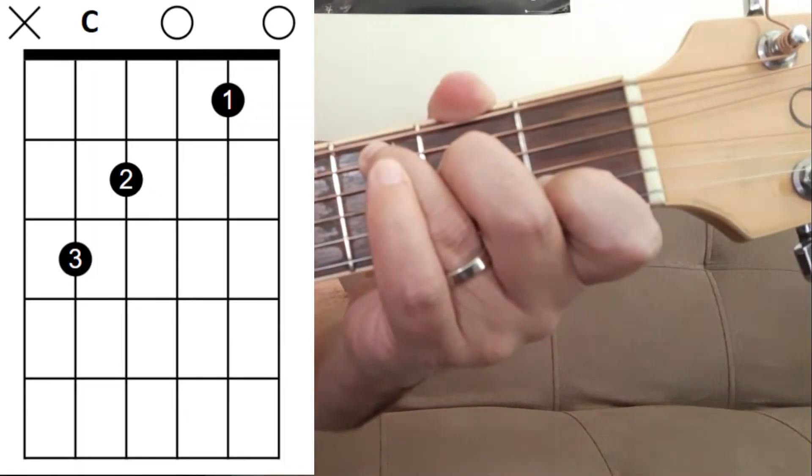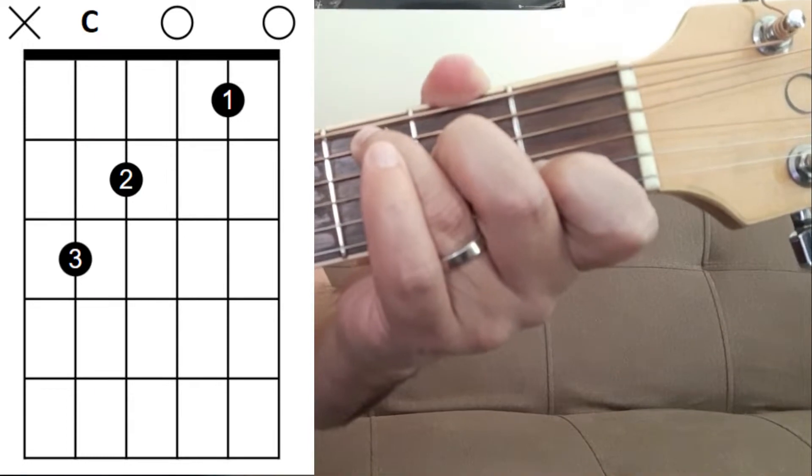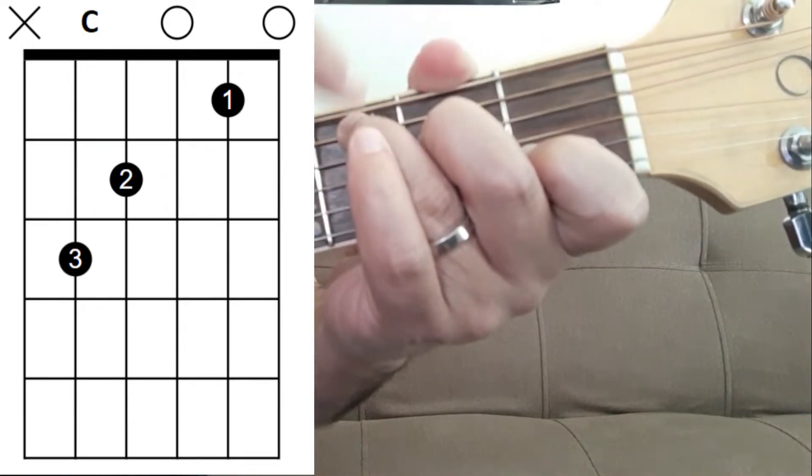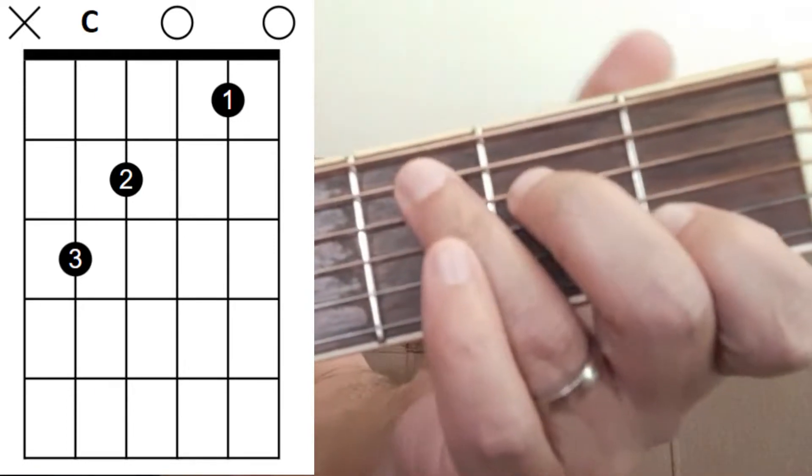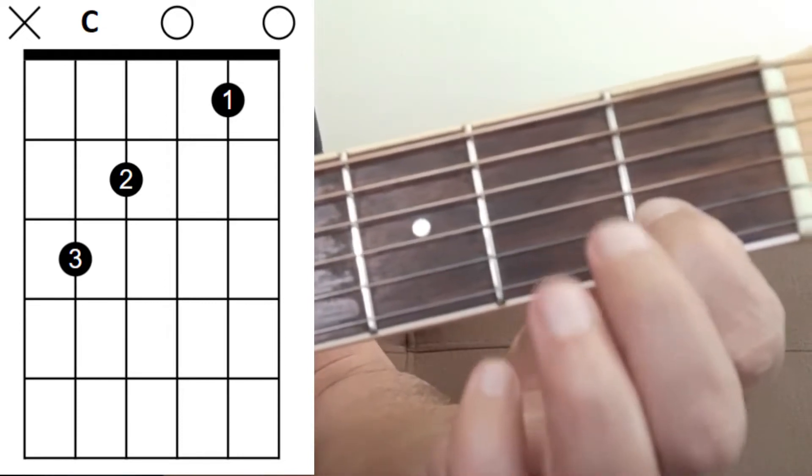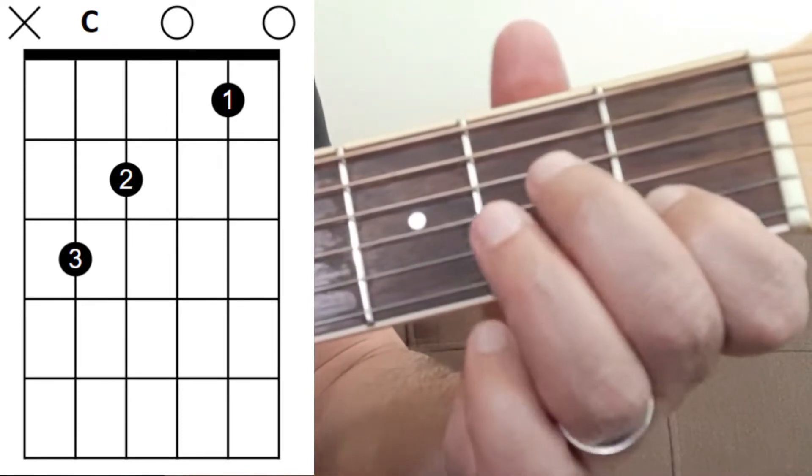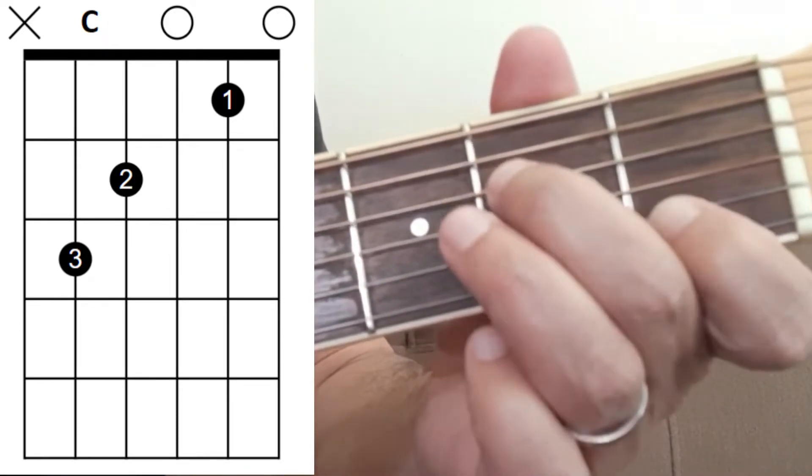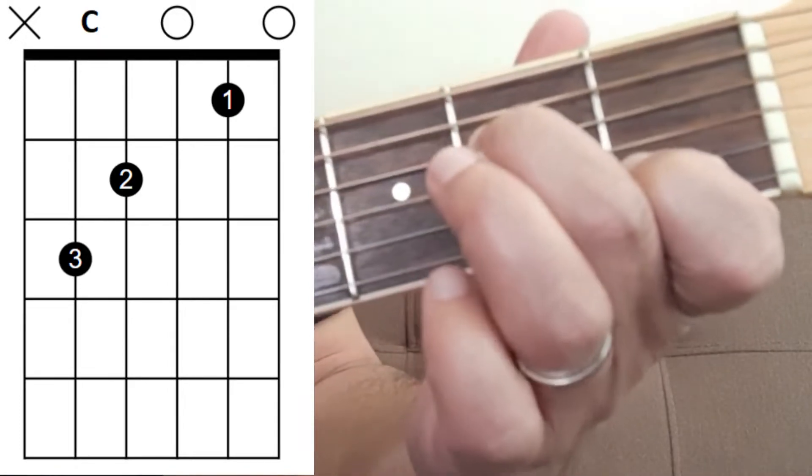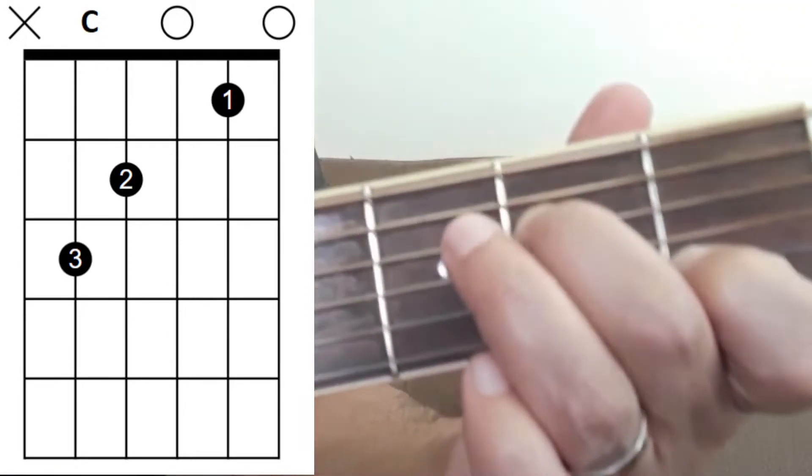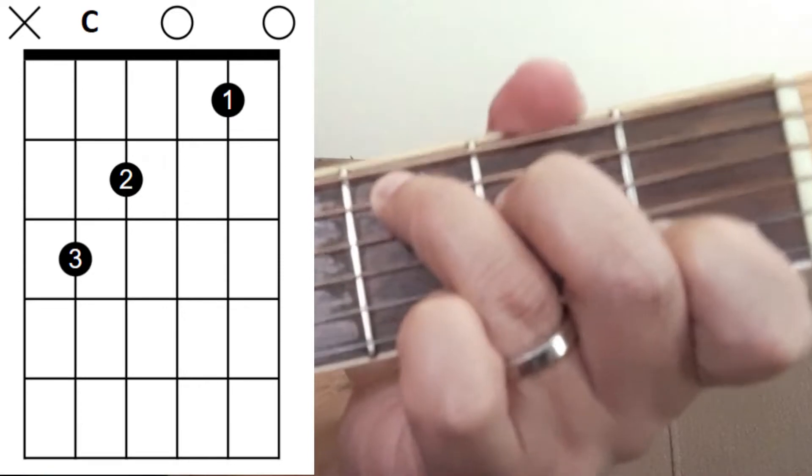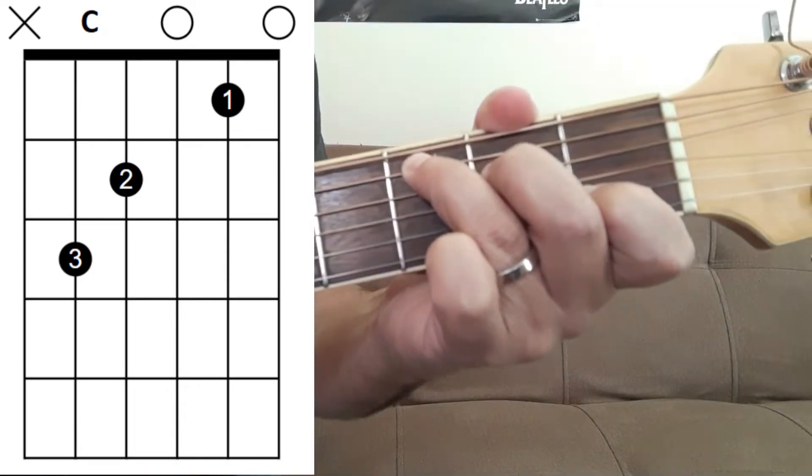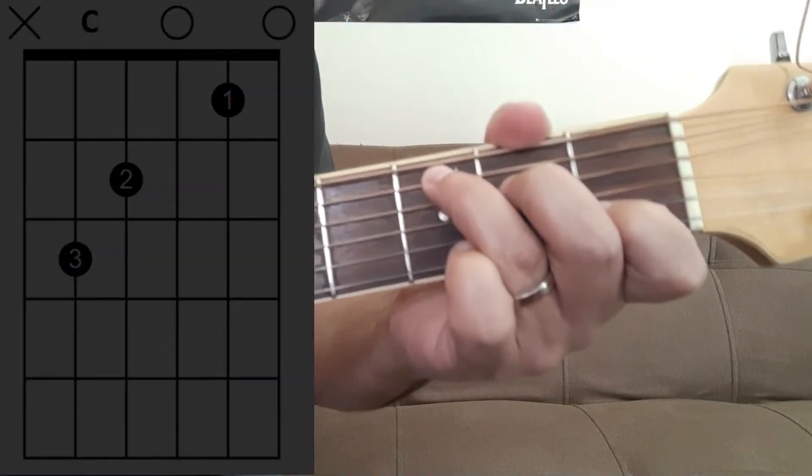Here's version 1 of the open C chord and for this we're using the 1st, 2nd and 3rd fingers. The 1st finger is on the 1st fret of the B string, the 2nd finger is on the 2nd fret of the D string and the 3rd finger is on the 3rd fret of the A string. And for this you're going to play the top 5 strings.